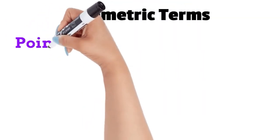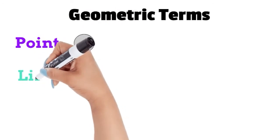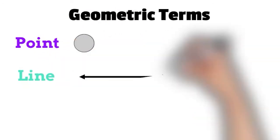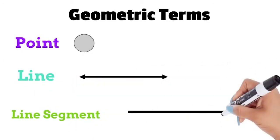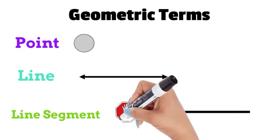A point is a location in space. A line is a group of points forming a straight line with no ending point. A line segment is a group of points forming a straight line with two endpoints. Remember, line segments stop.